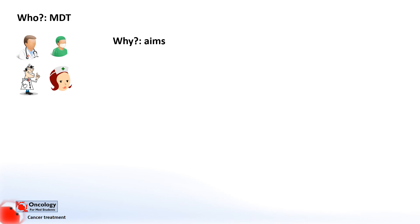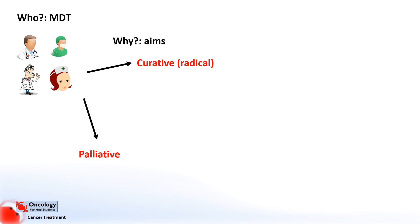When talking about the intention of treatment, there are broadly two categories, and these are curative and palliative. Curative treatment, also known as radical treatment, has the aim of curing the disease — in other words, getting rid of it completely.